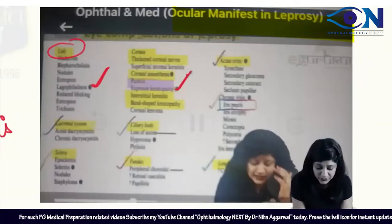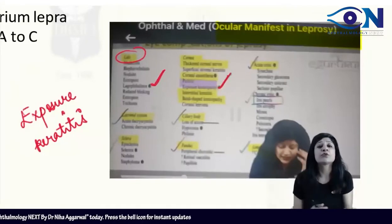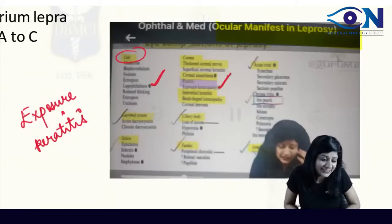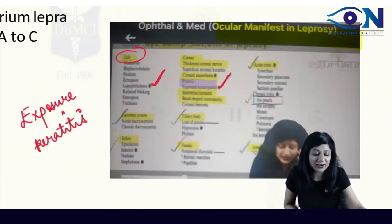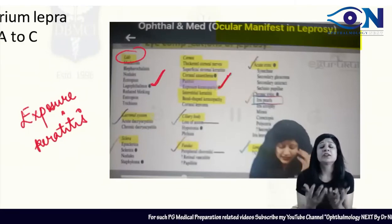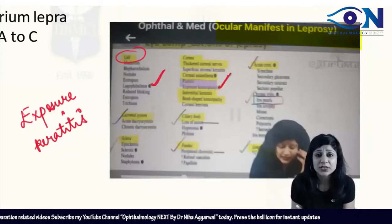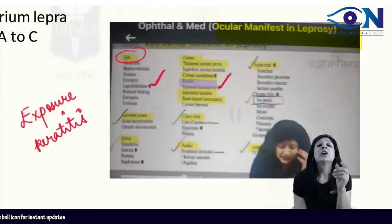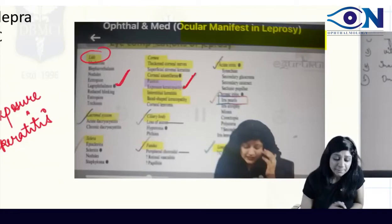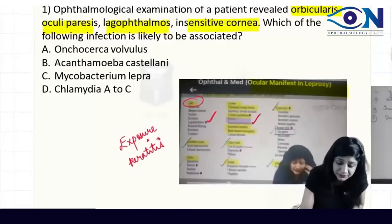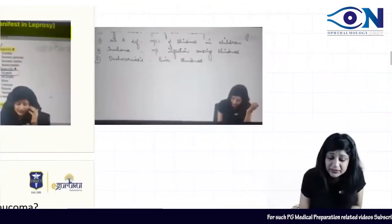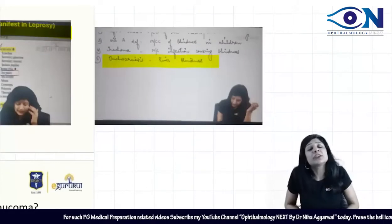As I marked during teaching, the important findings include exposure keratopathy and iris pearls appearance in leprosy in the fundus. We are expecting a lot of integrated questions. Decreased corneal sensations in leprosy is well established — we studied it and made a flowchart of all eye complications in leprosy. So this question is not a problem; everyone should be clear: the answer is Mycobacterium leprae.